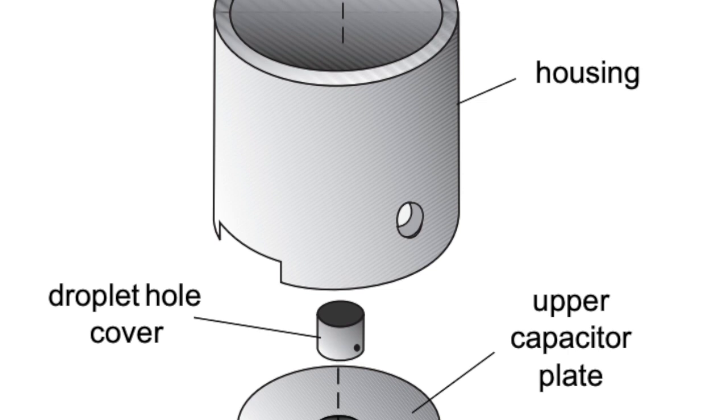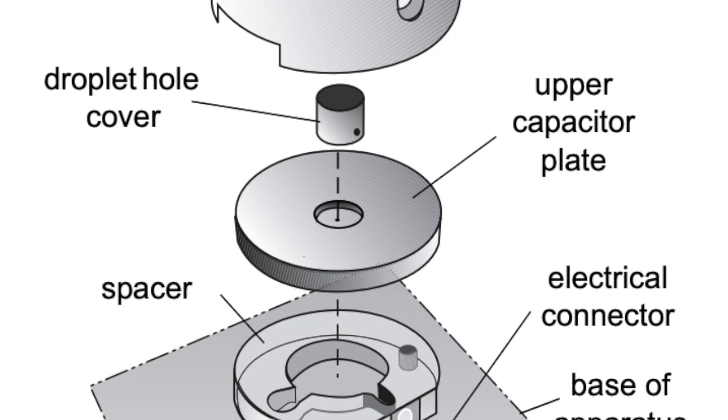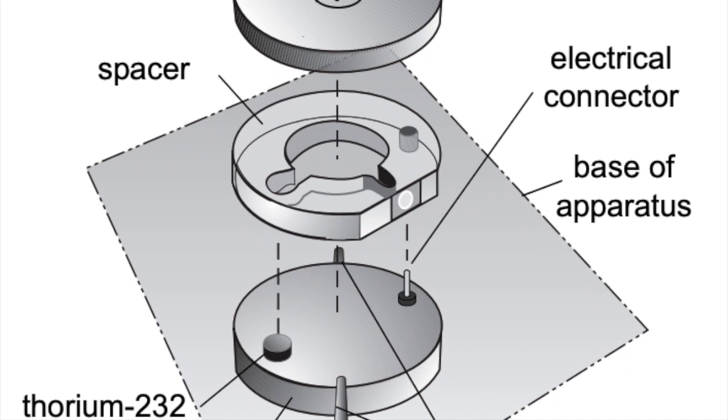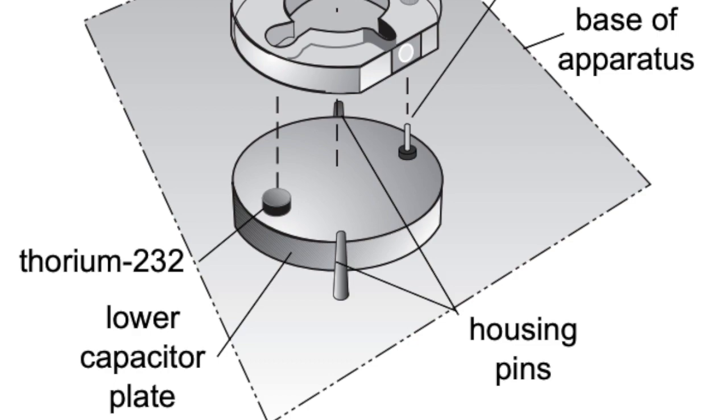The upper capacitor plate made out of brass, a plastic spacer, the lower capacitor plate, also a brass one, an alpha source, and an electrical connection to the upper capacitor plate.